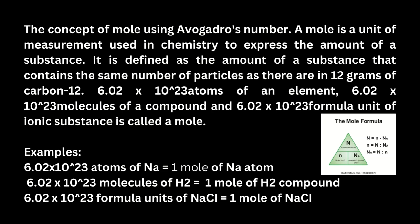Concept of mole using Avogadro's number: A mole is a unit of measurement used in chemistry to express the amount of a substance. It is defined as the amount of a substance that contains the same number of particles as there are in 12 grams of carbon — that is, 6.02 × 10²³ atoms of an element, 6.02 × 10²³ molecules of a compound, and 6.02 × 10²³ formula units of an ionic substance is called a mole.